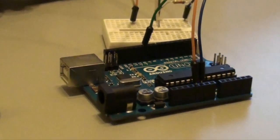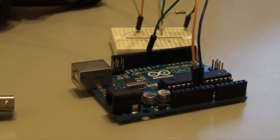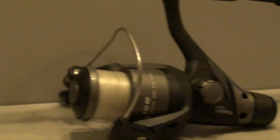This episode we build a bite indicator, with an Arduino Uno, a breadboard, some wires, aluminum foil, and a clothespin.